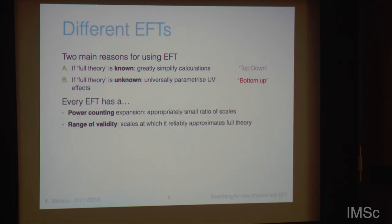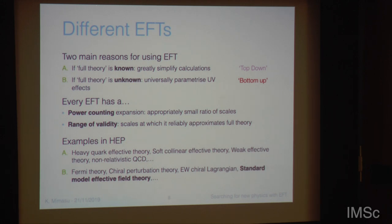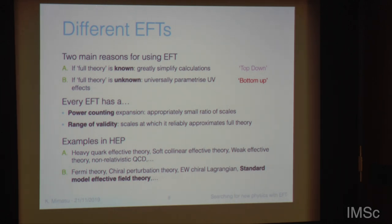Every EFT has some kind of power counting expansion — an appropriately small ratio of scales — which implies a range of validity, meaning scales at which the EFT reliably approximates the full theory. In high-energy physics, top-down examples include heavy quark effective theory, soft collinear effective field theory, weak effective theory, and non-relativistic QCD. Bottom-up examples include Fermi theory, chiral perturbation theory, the electroweak chiral Lagrangian, and of course the standard model effective field theory, which is going to be the main topic of the second part of these lectures.